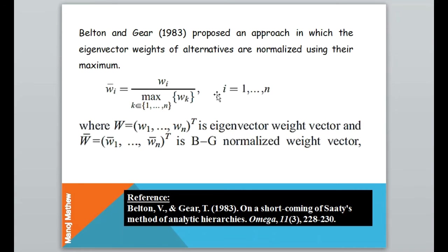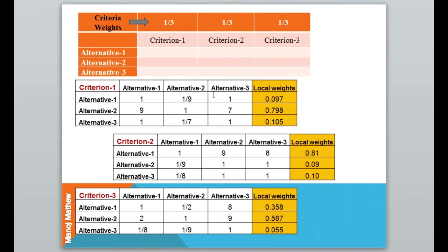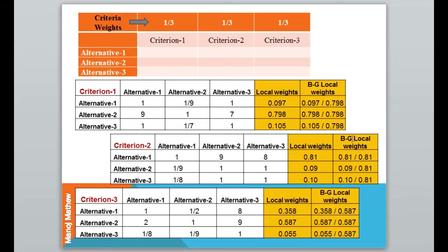I will solve the same previous example using this approach. You all remember the step in which we computed the local weights of each alternative under every criterion. Once we compute this, the next step is to compute the BG normalized local weights. For that, we divide by the maximum. In the first column, the maximum value is 0.798, so we divide all values by 0.798.